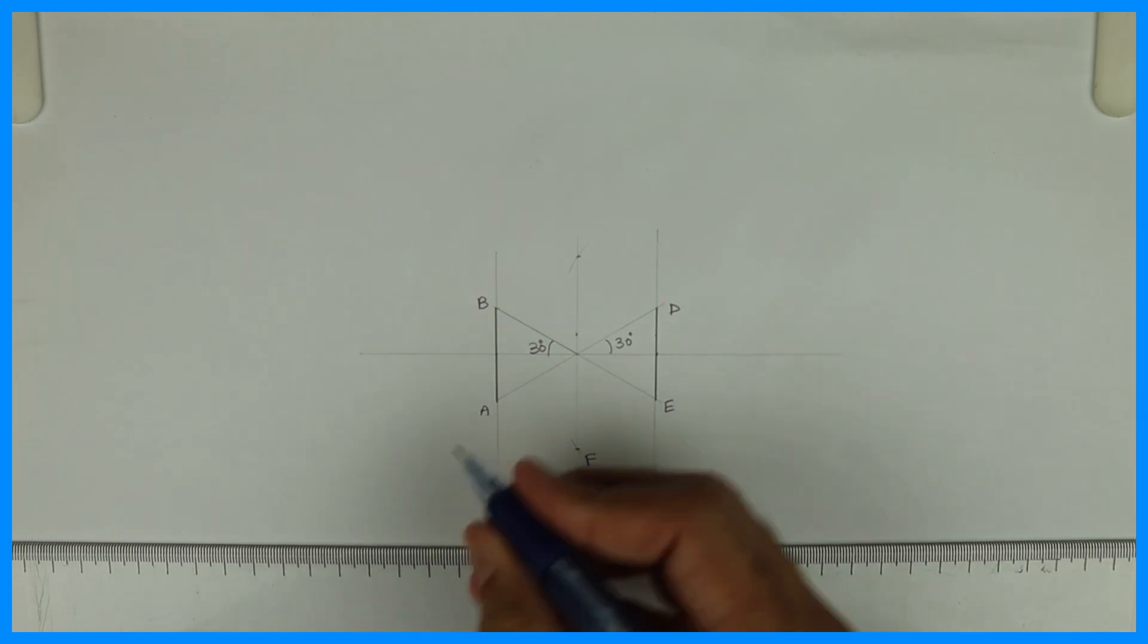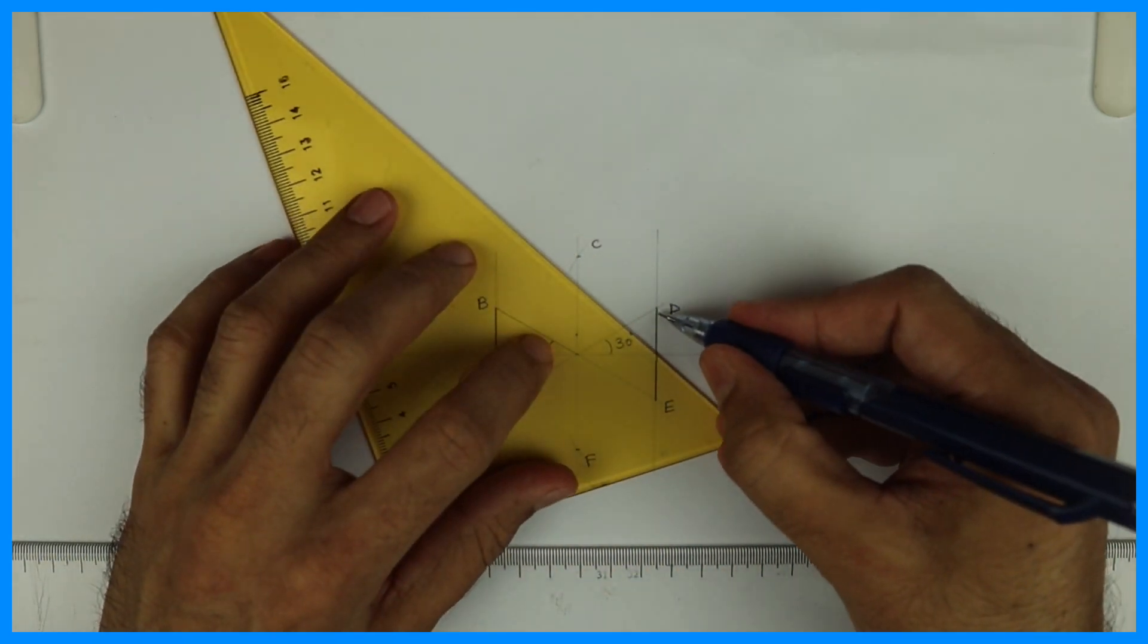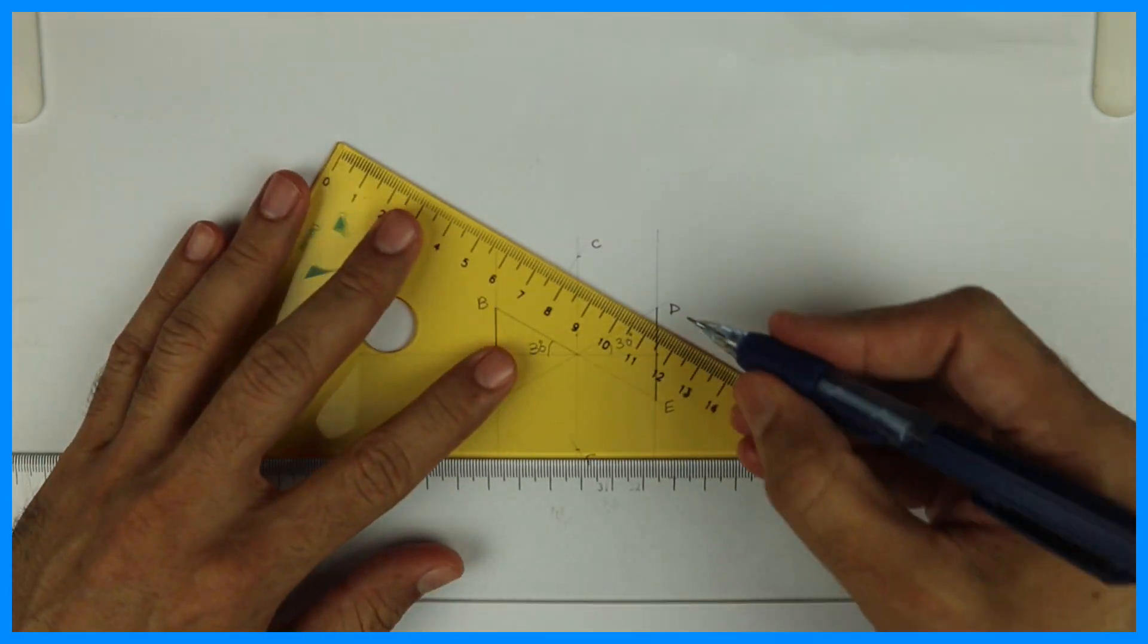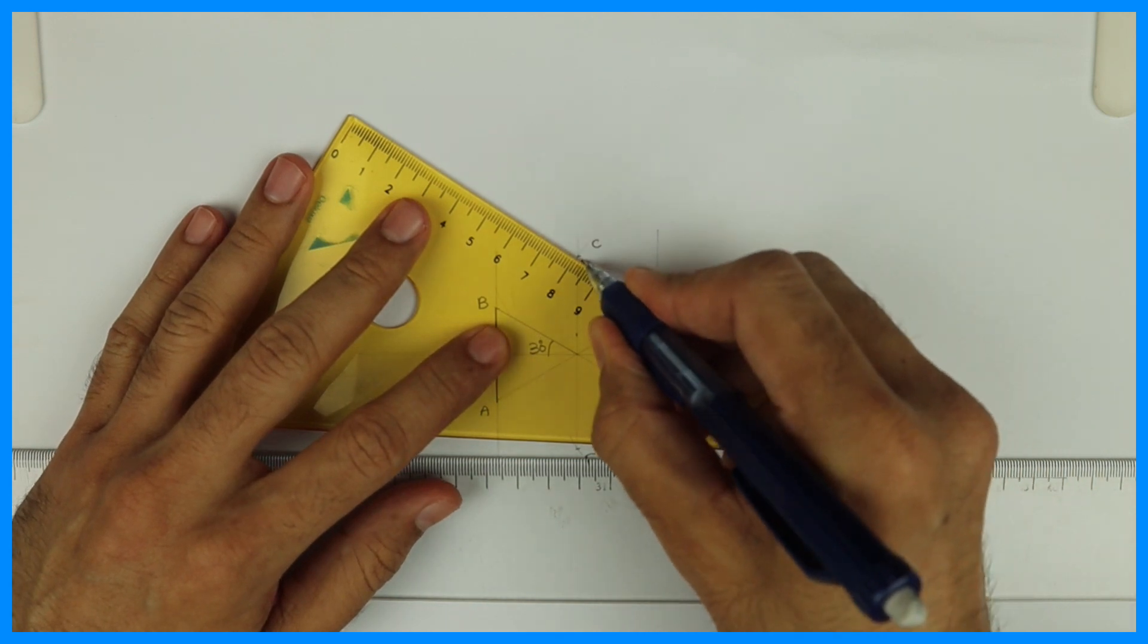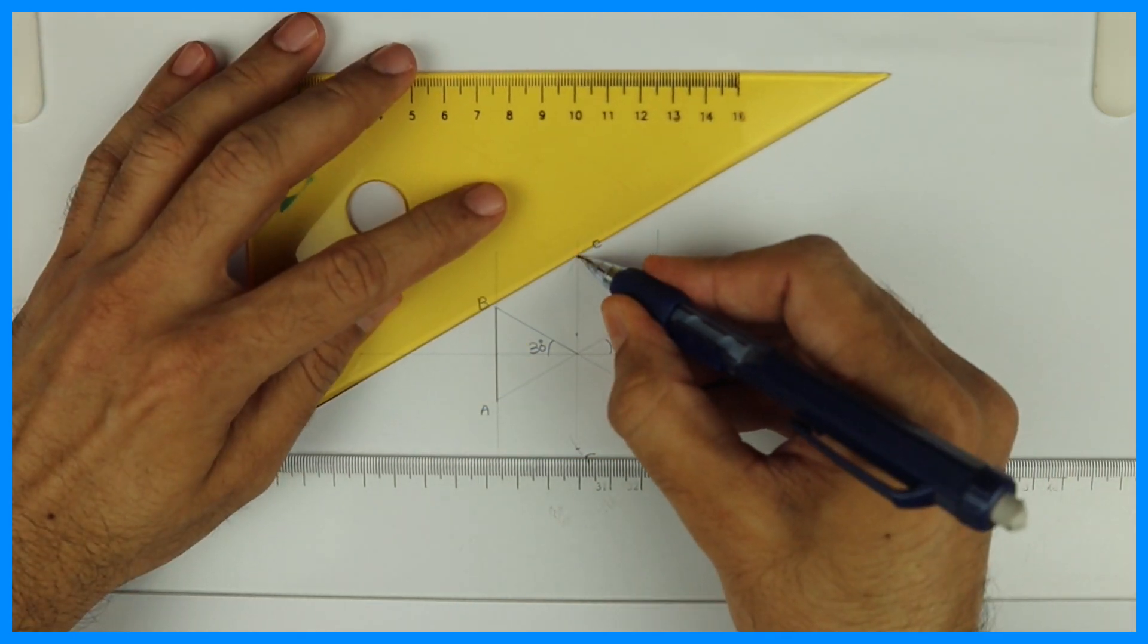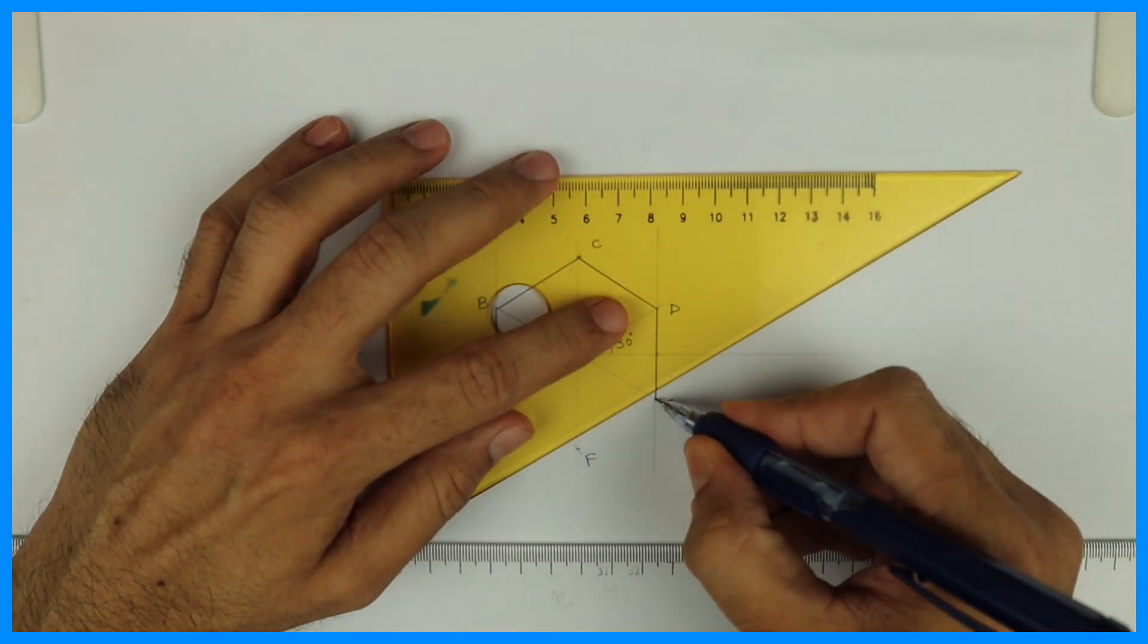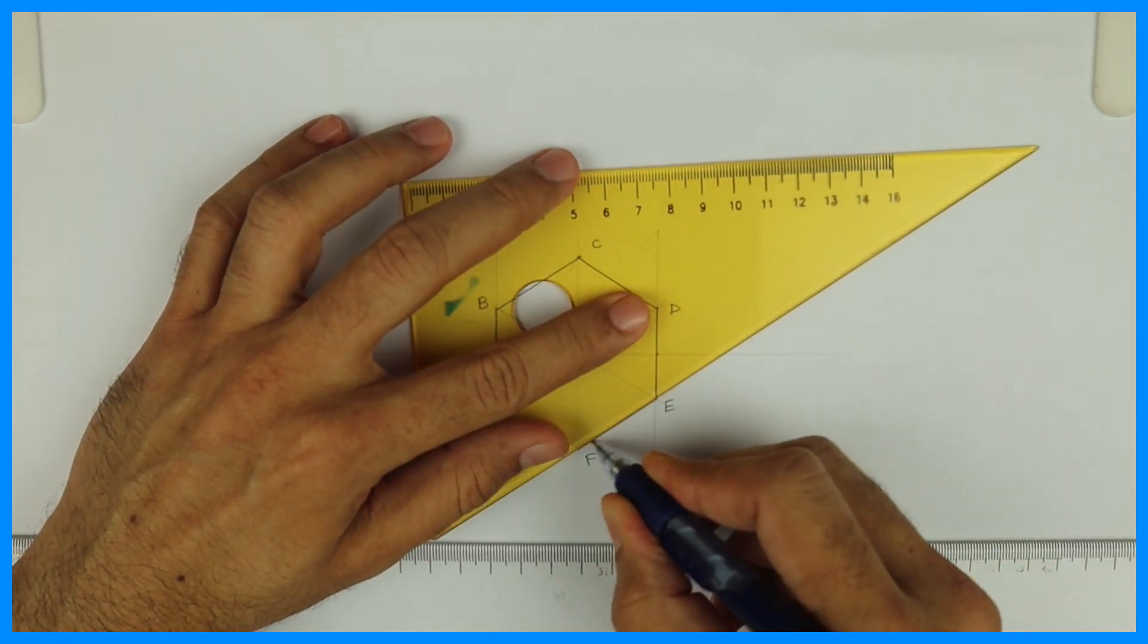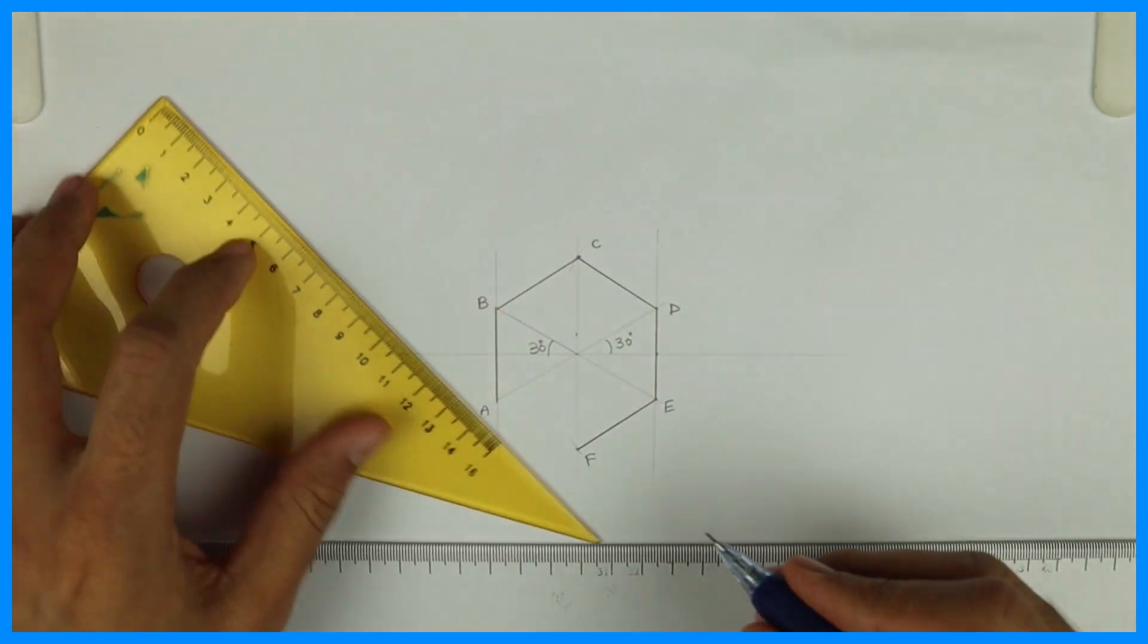Now we join all these lines. Join C to D, join B to C, join E to F, and A to F. So we got hexagon across flat.